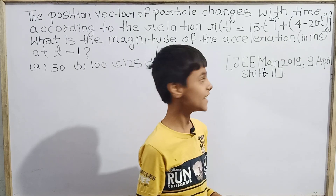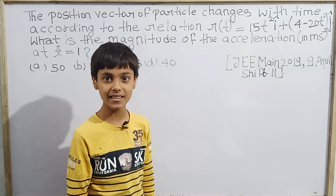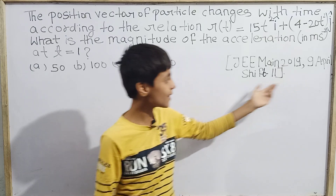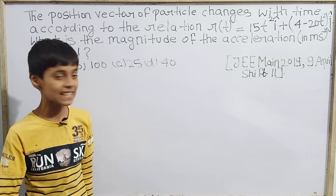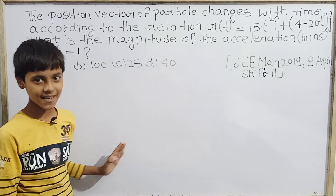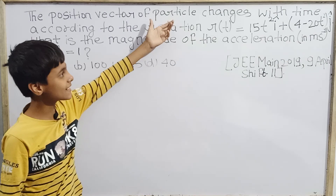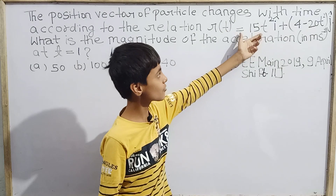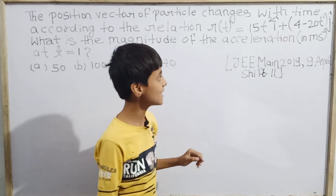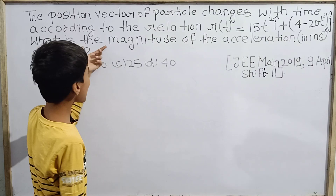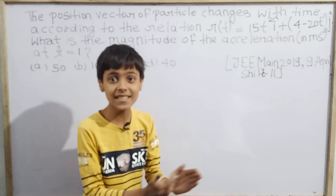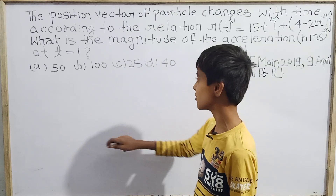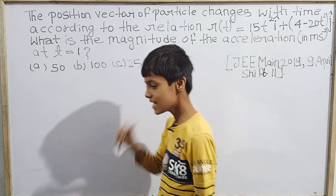Welcome everyone, this is Salim Khan and today I am back with a new topic — a kinematics question from JEE Mains 2019, asked on 9th April in the second shift. The question asks: the position vector of a particle changes with time according to r(t) = 15t² î + (4 − 20t²) ĵ. What is the magnitude of the acceleration in m/s² at t = 1? Options: A) 50, B) 100, C) 25, D) 40.